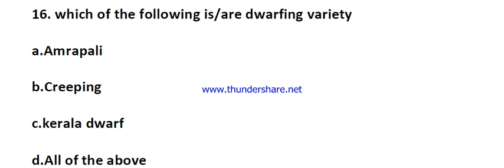Question number sixteen: which of the following is a true dwarfing variety? Amrapali, Creeping, and Kerlador — all three are dwarfing in nature. There are also two more dwarfing varieties: Arka Aruna and Pyruan. These five varieties are dwarfing in nature.